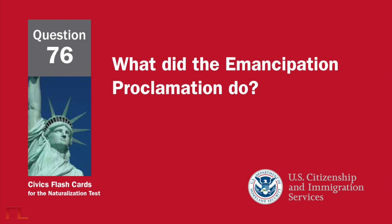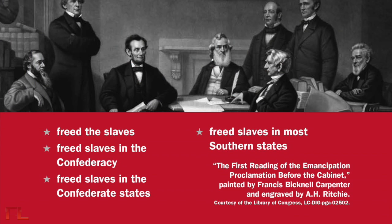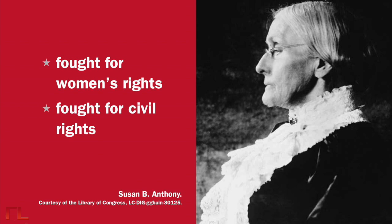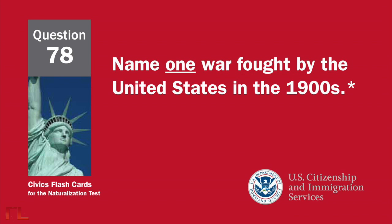What was one important thing that Abraham Lincoln did? Freed the slaves — Emancipation Proclamation — saved or preserved the Union, or led the United States during the Civil War. What did the Emancipation Proclamation do? Freed the slaves, freed slaves in the Confederacy, freed slaves in the Confederate States, or freed slaves in most Southern states. What did Susan B. Anthony do? Fought for women's rights, or fought for civil rights.